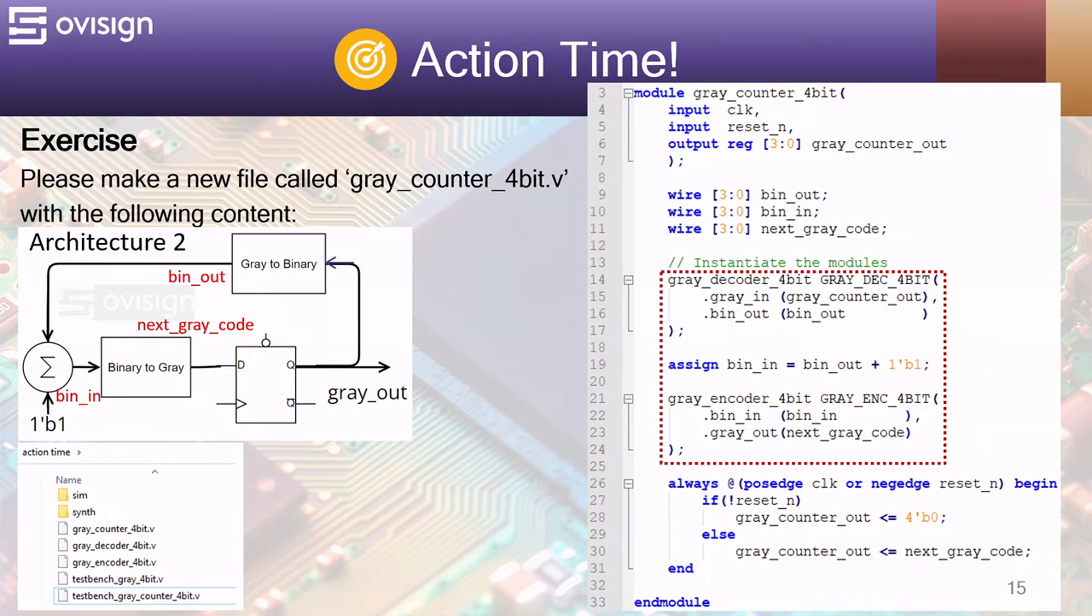Bin_out is the output of the gray to binary encoder. Bin_in is obtained by incrementing with one the value of bin_out. Bin_in enters the gray encoder that outputs the next gray code which is stored in the register at the next posedge. In this manner we generate consecutive gray codes at each positive edge of the clock.